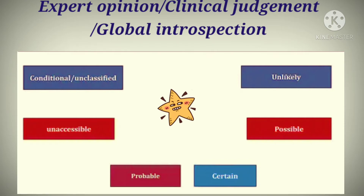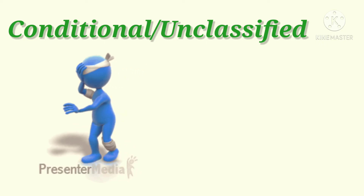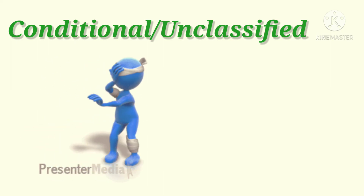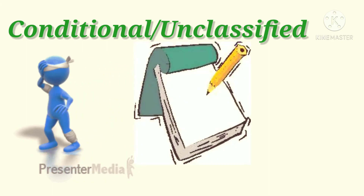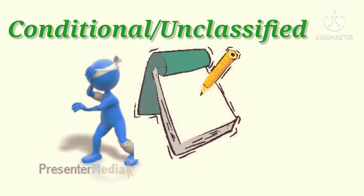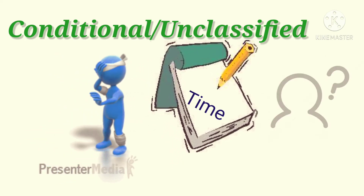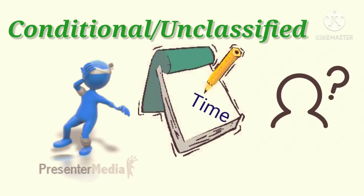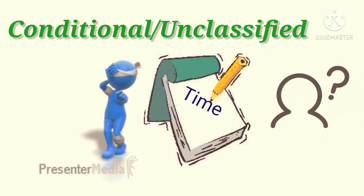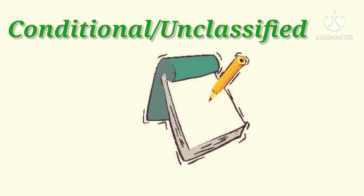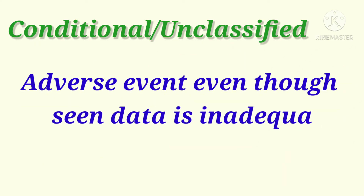Now I will explain each of these one by one. First is conditional or unclassified. Suppose a patient has taken a drug and then develops an adverse drug reaction. After that, the patient fills the drug event report form but fails to mention the time of the adverse event. In the absence of data, the inference on association between drug and adverse event cannot be conclusively made. So here the adverse event is categorized as conditional or unclassified.